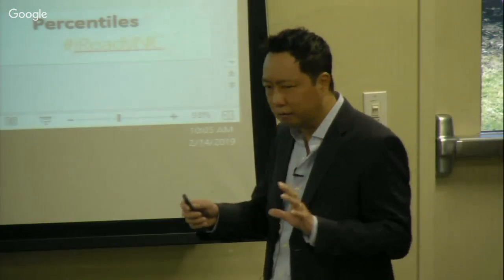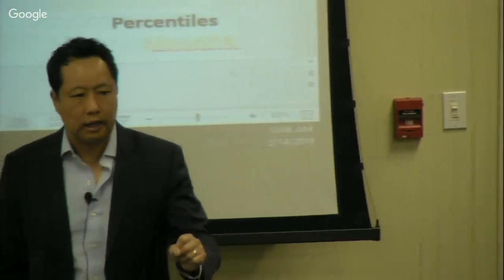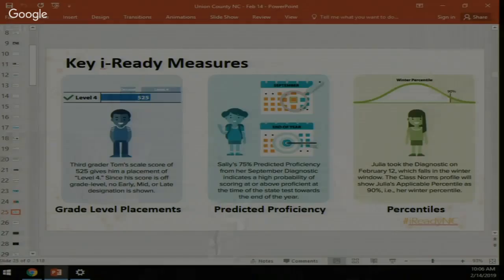iReady starts as an adaptive diagnostic. Students receive questions at their current grade level — if they get a question right, they get a more challenging one; if wrong, a slightly easier one. The diagnostic adapts across domains until we determine where a student is, and we denote that as a scale score. A score like 525 has little meaning to most people, so we interpret it to indicate what grade level the child is working at.